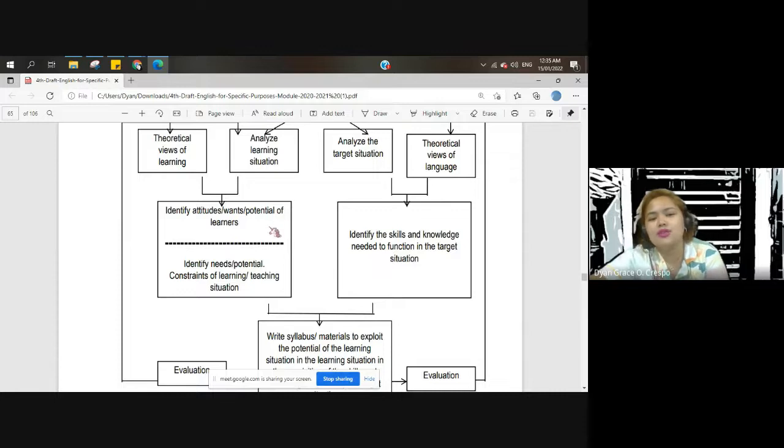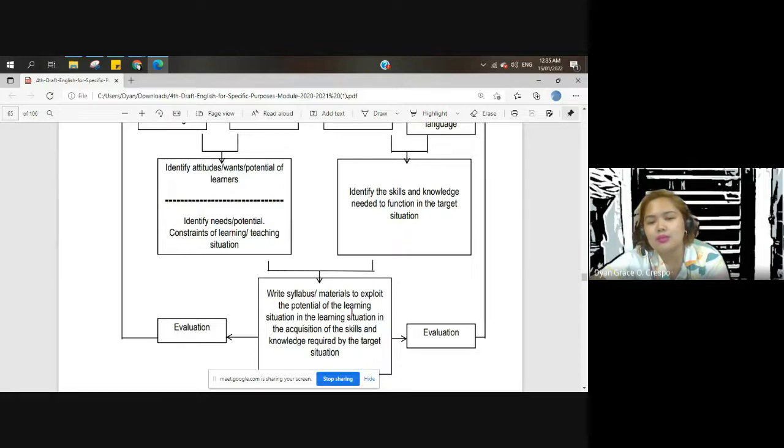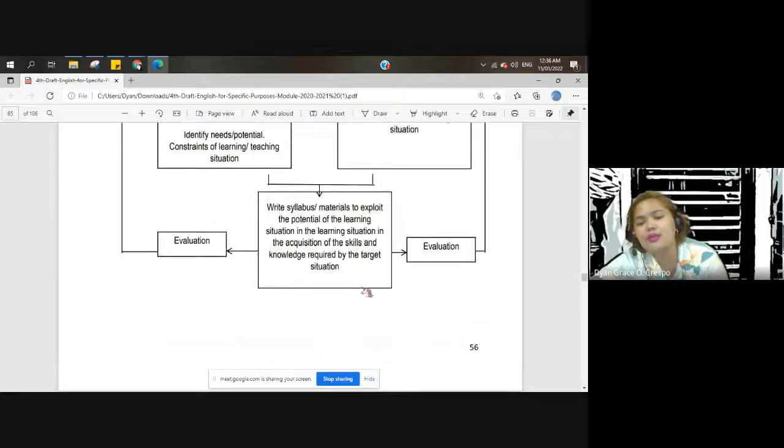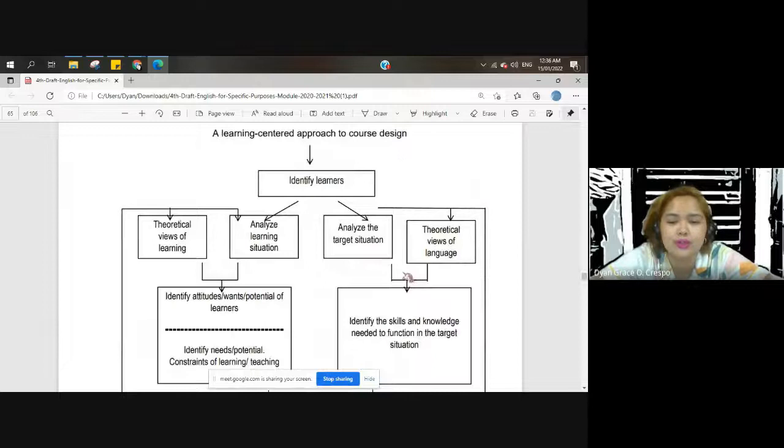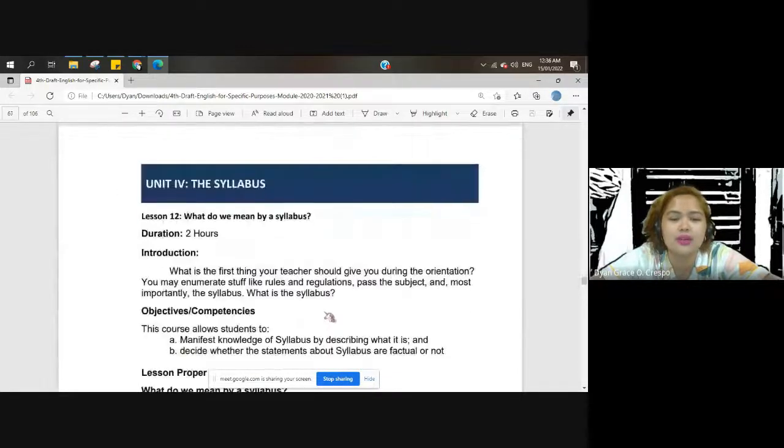When we analyze the learning situation, we can identify the different attitudes and potential of the learners and identify their needs. After that, we write a syllabus. With this, we write the syllabus, then afterwards we go for evaluation, and the discussion repeats.